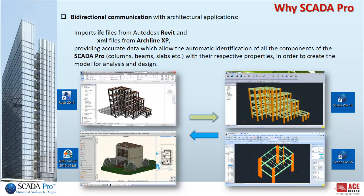SCADA Pro also has bidirectional communication with architectural applications. It is able to import IFC files from Autodesk Revit and XML files from ArcLine XP, providing accurate data which allows the automatic identification of all components in SCADA Pro — such as columns, beams, slabs, etc. — with their respective properties, in order to create the model for analysis and design.